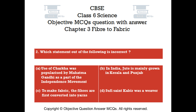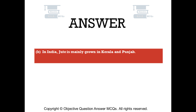Question number 2. Which statement out of the following is incorrect? Option A: use of charkha was popularized by Mahatma Gandhi as a part of the independence movement. Option B: in India, jute is mainly grown in Kerala and Punjab. Option C: to make fabric, the fibers are first converted into yarns. Option D: Sufi saint Kabir was a weaver. The right answer is option B — in India, jute is mainly grown in Kerala and Punjab. This statement is incorrect.